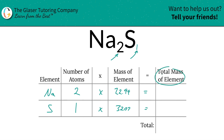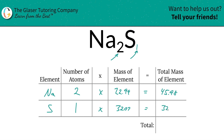And then to find the total mass of the element in the compound, just simply multiply this row across. So for sodium, that's 45.98 units of mass. And then for sulfur, 32.07 units.